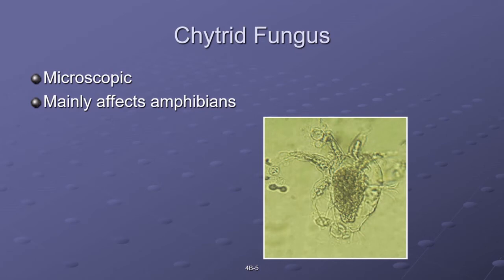Then we have the chytrid fungus. It's a fungus and it's microscopic, and it causes an infectious disease in amphibians. It's suggested as a principal cause of worldwide amphibian decline.